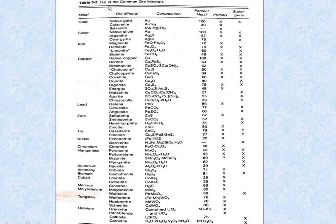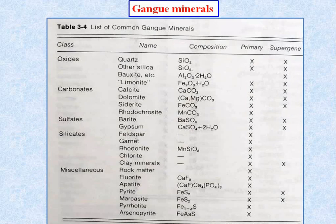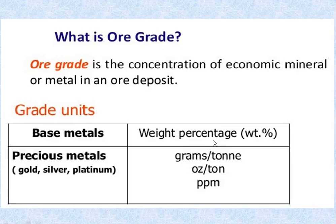This is the list of common ore minerals and common gangue minerals. Commonly, gangue minerals are quartz, limonite, calcite, dolerite, barite, etc. Grade is the metal content of an ore — the higher the percentage of metal in any ore, the better the grade. The ore grade is the concentration of economic mineral or metal in the ore deposit. For base metals, units are weight percentage; for precious metals (which occur in very small amounts), grade is expressed in grams per ton.